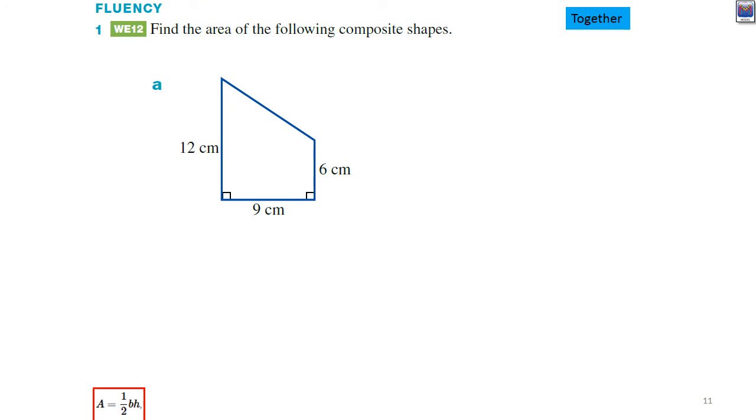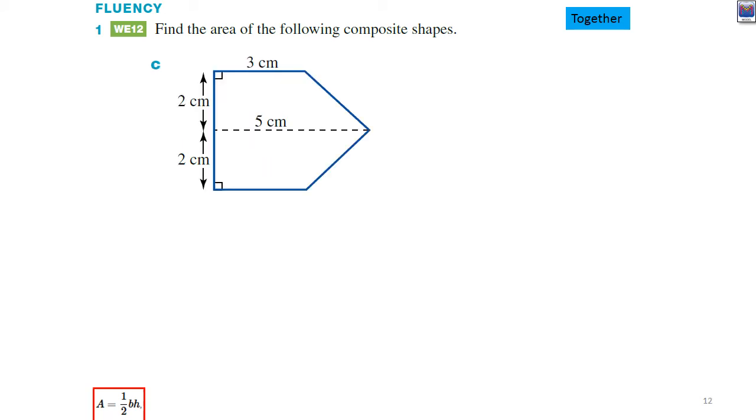The rest are done exactly the same way. For example in this one you could decide to work out the area of this triangle and subtract it from the overall rectangle. Or you could divide it here, work out the area of this rectangle, the area of this triangle and add them together.